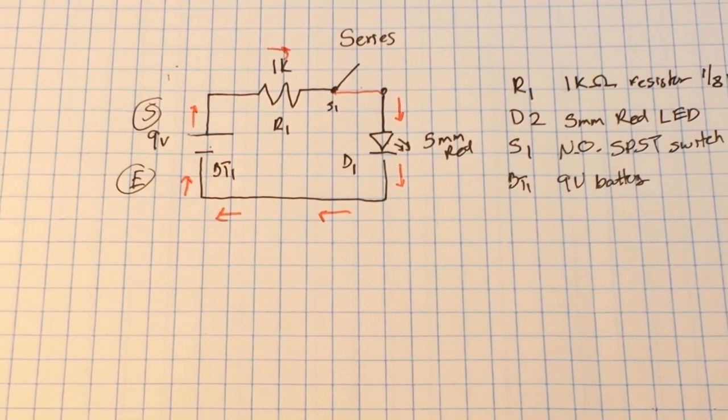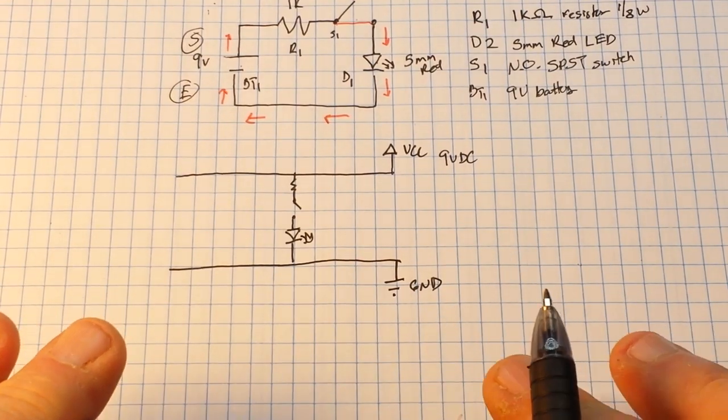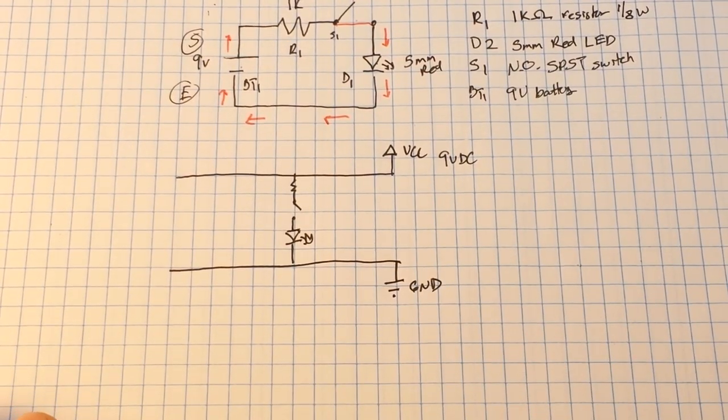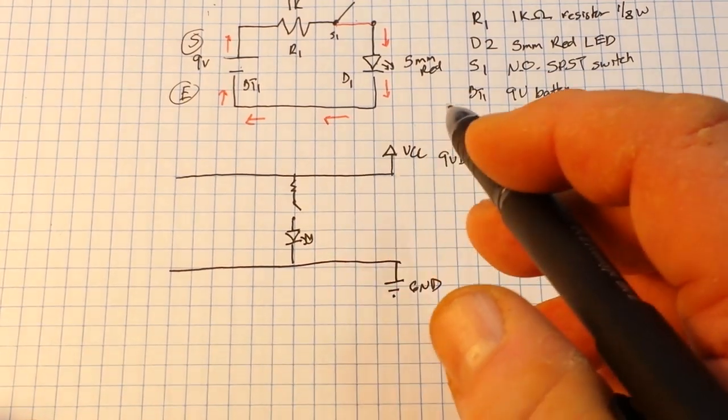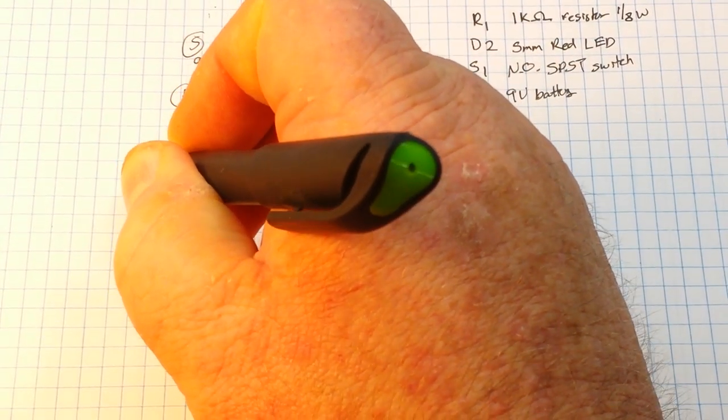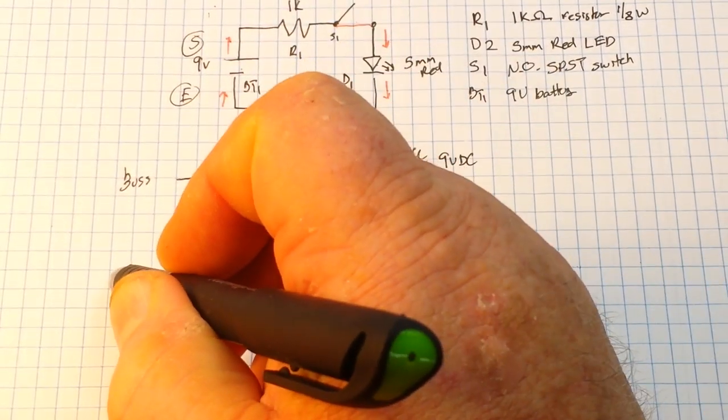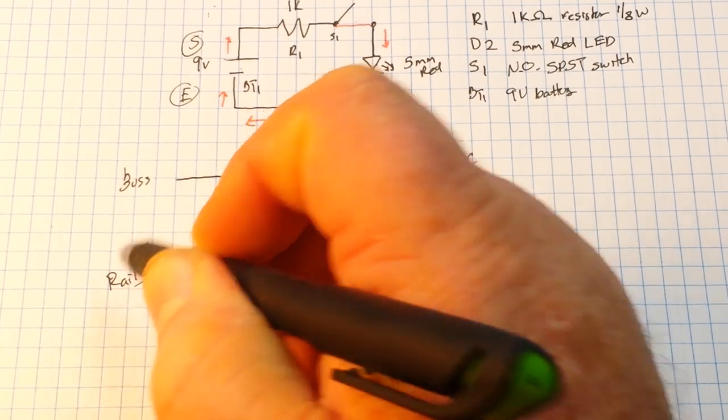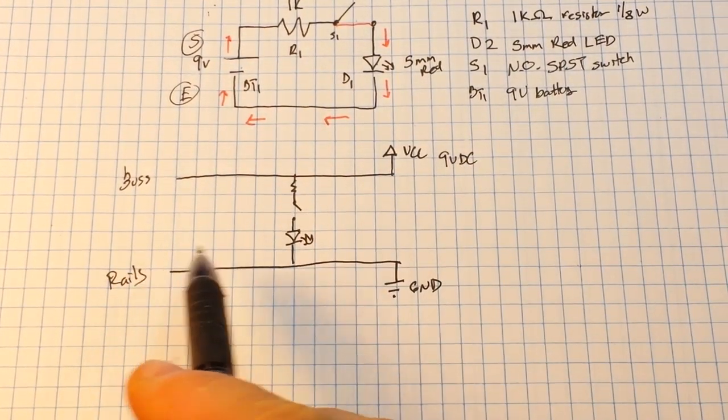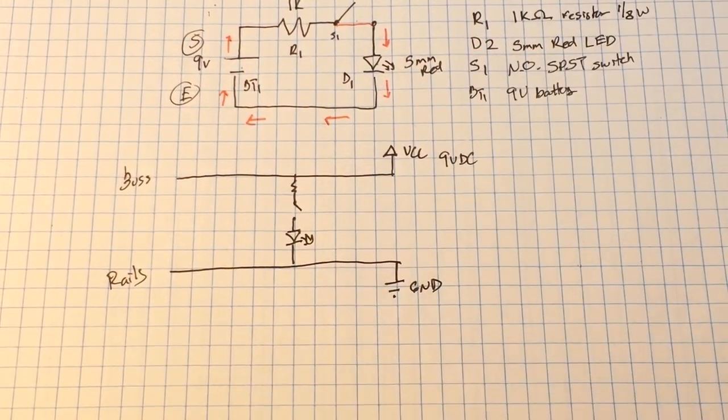Alright, now we have the exact same circuit but it's drawn in a different way. It's drawn with what might be called a bus, or I like to call them rails.